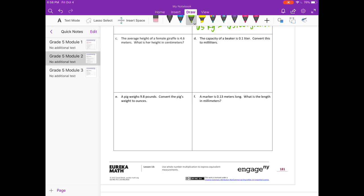C. The average height of a female giraffe is 4 and 6 tenths meters. What is her height in centimeters? So first we need to know that 1 meter is equal to 100 centimeters. So we need to do 4 and 6 tenths meters times 100 to convert it to centimeters, which would be 460 centimeters. So then our statement would be something like 1 meter is equal to 100 centimeters. So 4 and 6 tenths meters is equal to 460 centimeters.